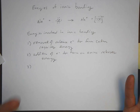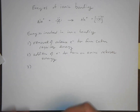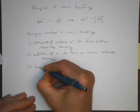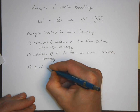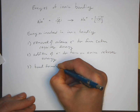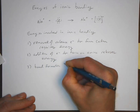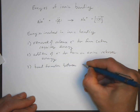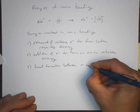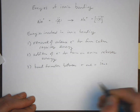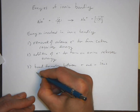So why do we have ionic compounds if it's not energetically favorable? We've forgotten one step: bond formation between positive and negative ions releases more energy.